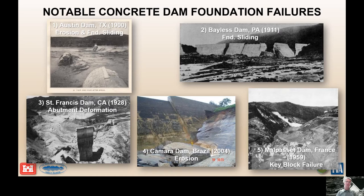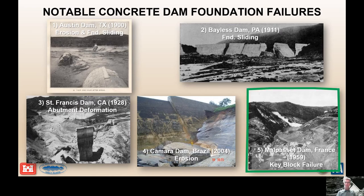Camara Dam in Brazil failed because of erosion and internal erosion of a weak, clay-filled shear that paralleled the slope and was not removed during foundation excavation. The dam sat on rock with that planar feature below it, and it washed out material, plugged the drains, increased uplift, and as it eroded that material the dam foundation settled and caused the left abutment to collapse.